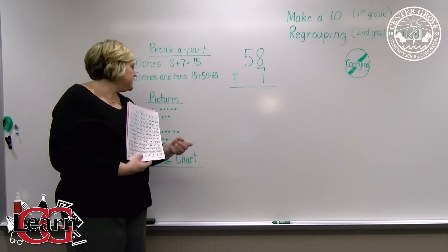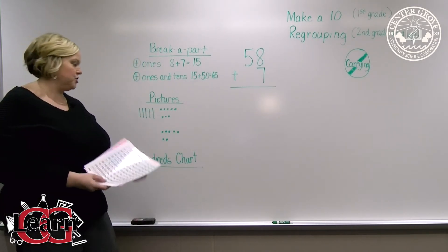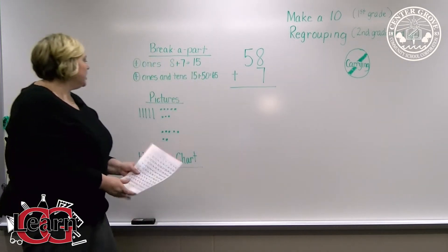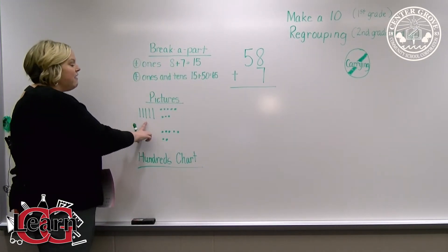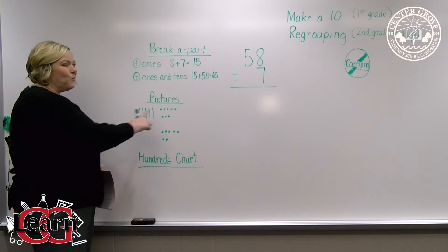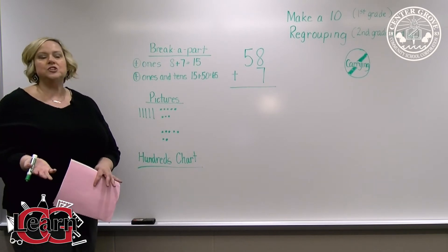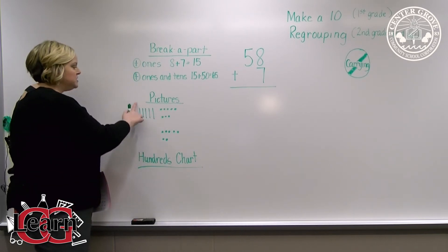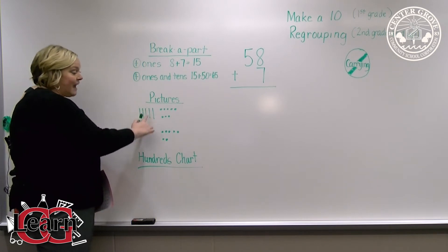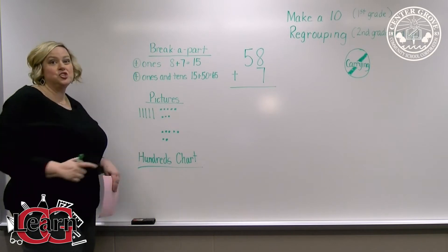Another strategy we use is we teach them pictures. You can see right here that I have my 58, five tens and eight ones. Notice how we teach the students how to draw this. We just use sticks or like tally marks to show a group of 10 and dots to show our ones.